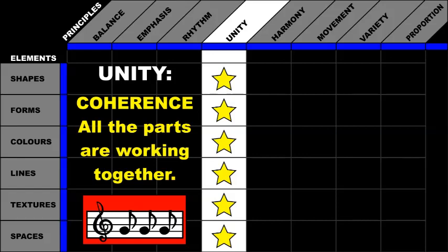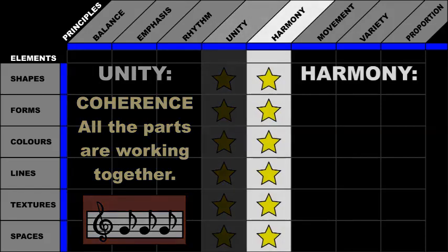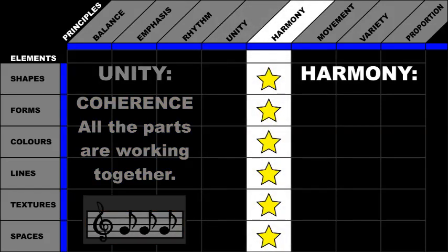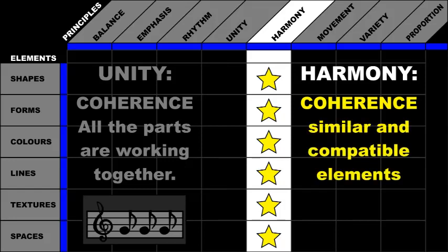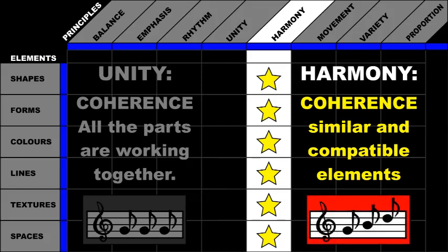The principle of unity is similar to the principle of harmony. Harmony is also used to give coherence to a work of art. However, coherence is achieved by using elements that are similar and compatible rather than elements that are the same. Like singers who are all singing the same song but with different blending musical notes.